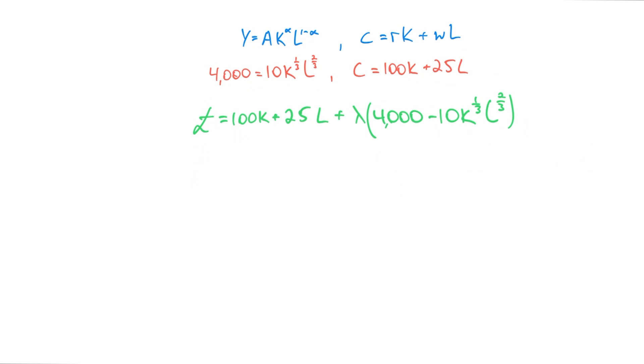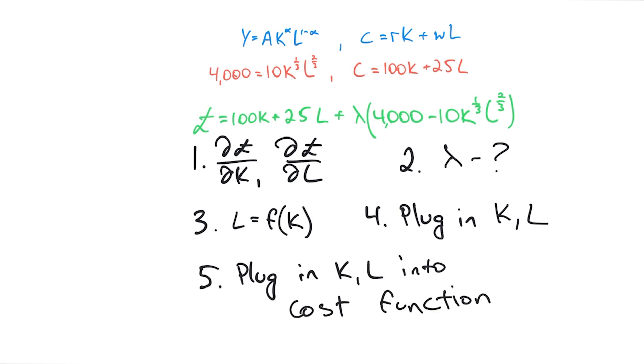Now we need five steps to solve this problem. The first step will be to find the partial derivatives with respect to K and L. The second step is to solve for lambda. The third step is to find the relationship between capital and labor, so we'll write it out as L equals a function of K. The fourth step would be to plug in our K and L into the production function to find the actual values. The final step will be to plug in K and L into the cost function to find out how much money the company will need.